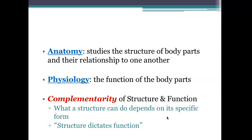For example, the cells that line the lungs are really flat and disc-shaped. Why does structure dictate function there? How does that form determine what those cells are used for? We know the lungs are used for gas exchange — bringing in oxygen and breathing out carbon dioxide. It's very convenient that those cells are flat and disc-shaped so that oxygen and carbon dioxide can easily diffuse across.